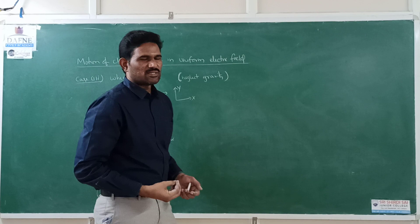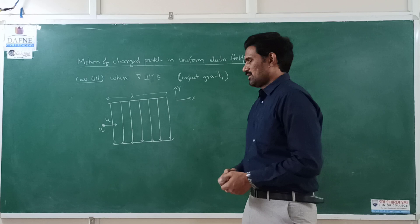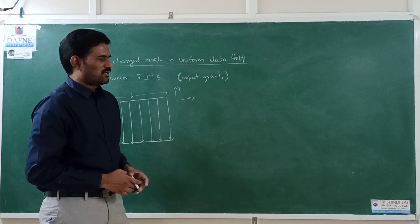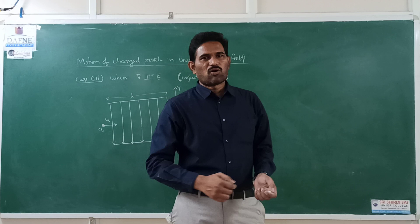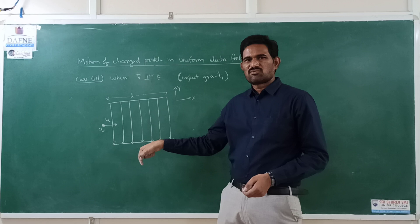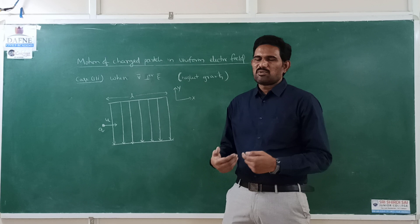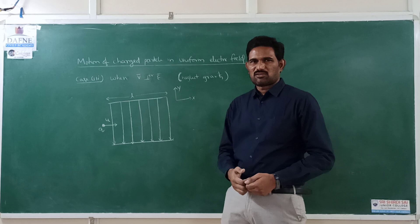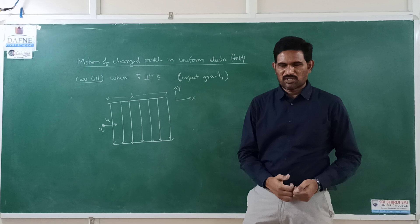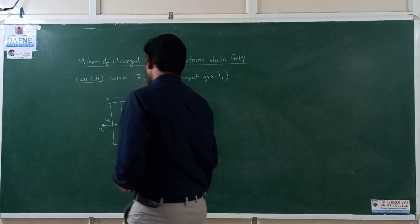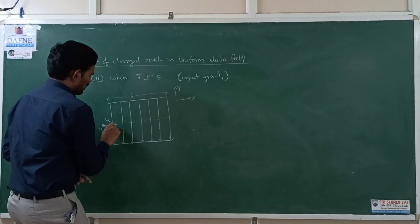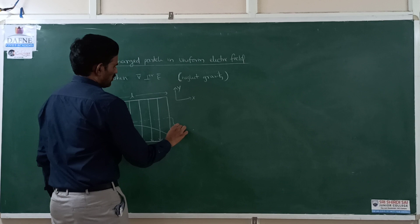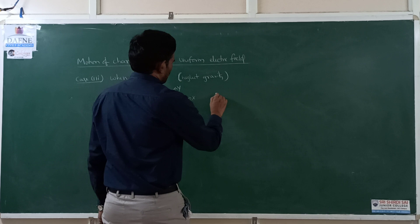This is a two-dimensional motion, similar to horizontal projectile motion in kinematics. When a body is projected horizontally from the top of a tower, gravity acts downward. Similarly here, the electric field force acts downward on the positive charge. The particle will therefore follow a parabolic path. There is no force in the horizontal direction, so the horizontal component of velocity remains constant.